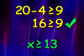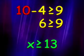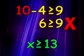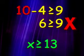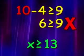We can also pick a number that's not in the solution, such as 10, and show that it gives us a statement that is not true. 6 is not greater than or equal to 9, so 10, a number that is not greater than or equal to 13, is not in the solution. So we can be confident that our solution of x is greater than or equal to 13 is correct.